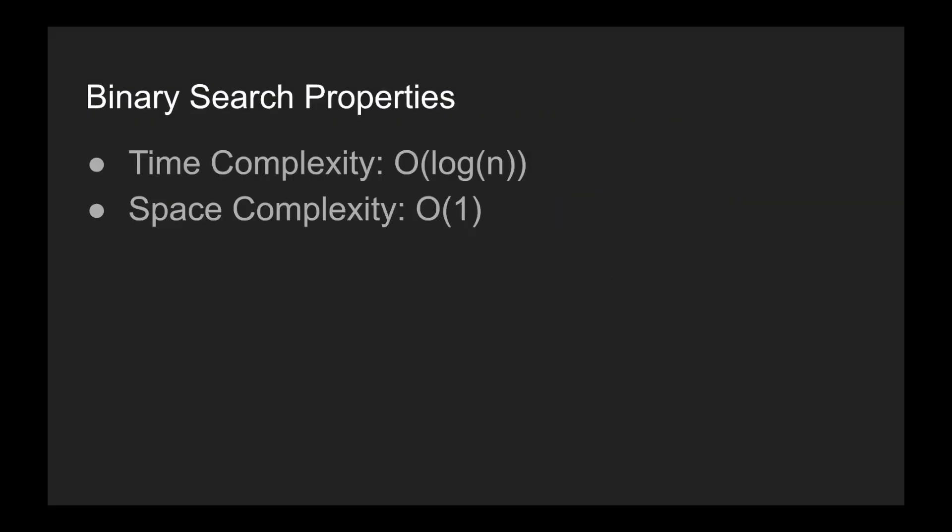To highlight some of the properties of binary search: its time complexity is O(log n), which is better than the time complexity of linear search, which is O(n). And its space complexity is O(1) if you write it in a way that doesn't take up any additional space outside of the input. But remember, this is not essential for you to understand the algorithm or the code we're about to write. So let's get right to coding.